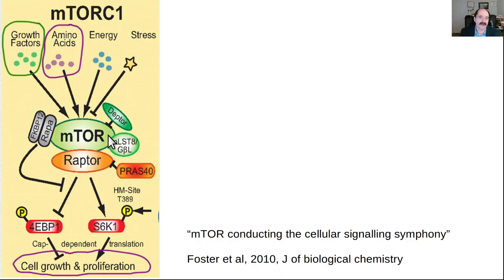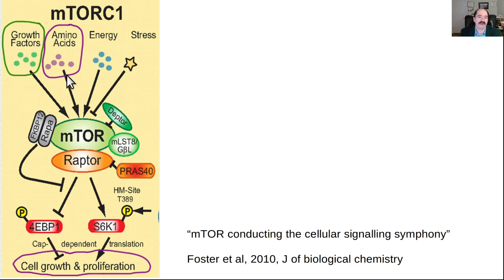Here's a picture of mTOR — it's a complex of proteins. Things that activate it include growth factors like insulin itself, which is anabolic, and insulin-like growth factor, which is always increased when insulin is increased. Amino acids — in particular the ones from meat: lysine, leucine, and methionine. What does mTOR do? It tells the cell to grow and proliferate.